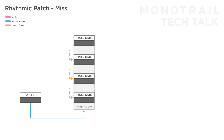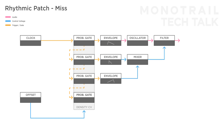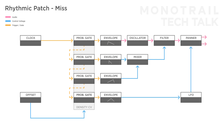Similar tricks can be used in ambient, generative, or drone setups. Especially the miss setting works nicely for this. If you feed a steady clock to the first gate and send the four outputs to various elements in your patch, you can create interesting rhythmic modulation. For example, trigger a slow attack decay envelope influencing the wave shape of an oscillator. You can trigger two different envelopes, mix them together, and have them influence a filter. Or use an envelope to modulate the speed of an LFO modulating a panning module.